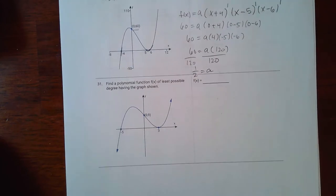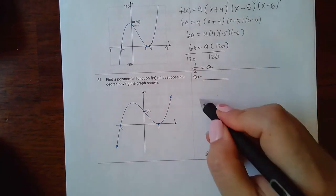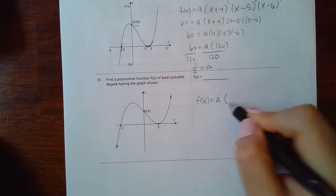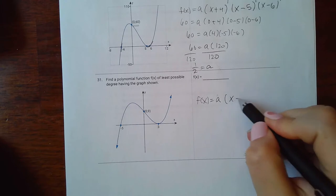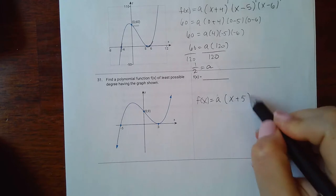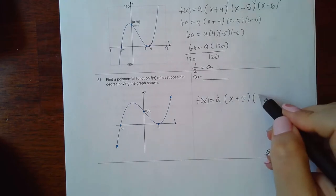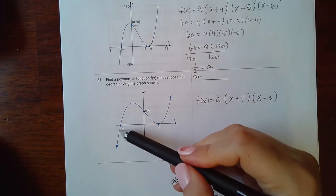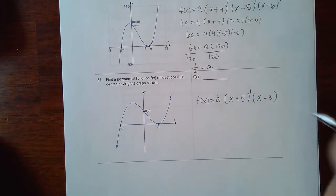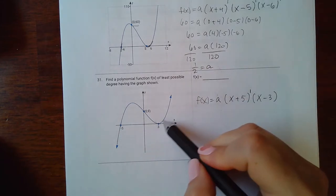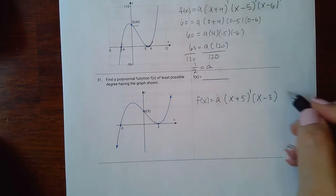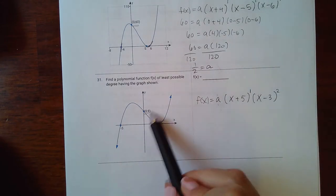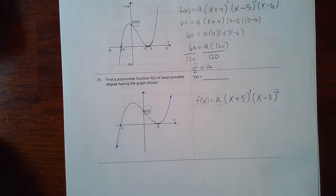Similarly for this one, f of x equals a times x plus 5 — since that intercept is negative 5 — and x minus 3. This one crosses through, which means the exponent is 1. This one bounces, which means the exponent is 2. To find a, I use this extra point.